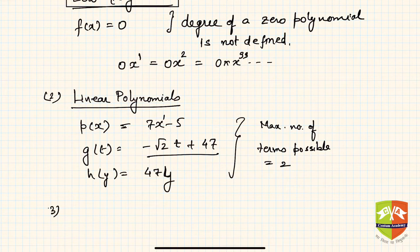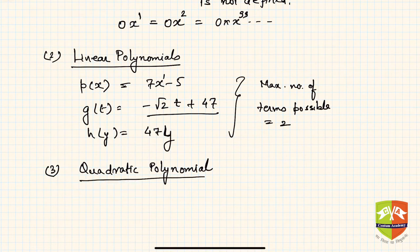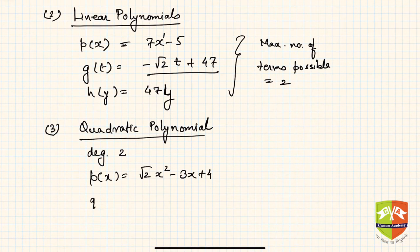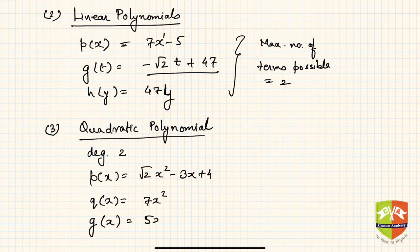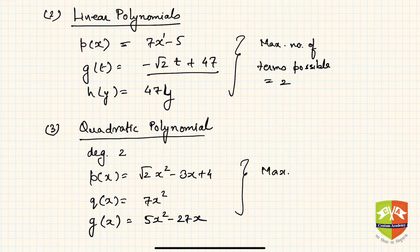Next is the very famous quadratic polynomial — polynomials of degree 2. Examples include p(x) = √2·x² − 3x + 4, q(x) = 7x², and g(x) = 5x² − 27x. The maximum number of terms possible in a quadratic polynomial is 3, which is degree 2 plus 1.